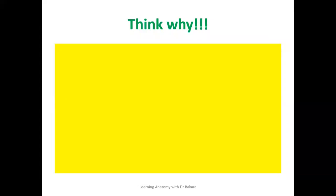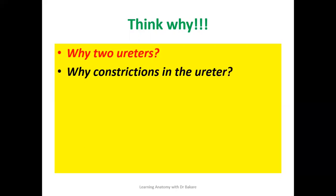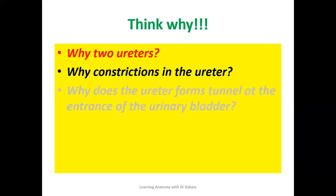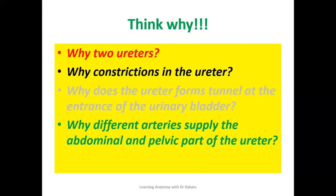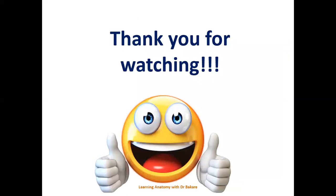So let's think about why. If you are able to justify and explain why these features occur, then this lecture is good enough for you. You should be able to explain why we have two ureters, why there are constrictions within the internal wall, why the ureter forms a tunnel at the entrance of the urinary bladder, and why different arteries supply the different regions of the ureter. Thank you for watching. I look forward to seeing you in the next class. Let's continue to upgrade through this channel.